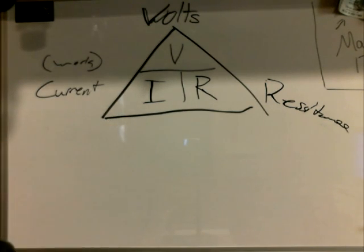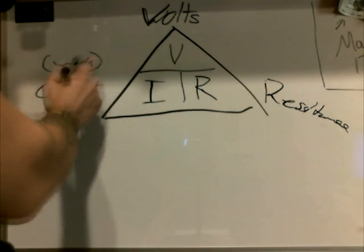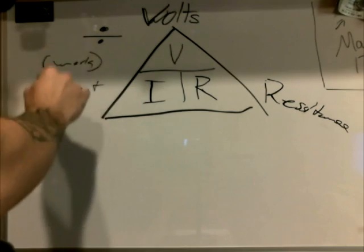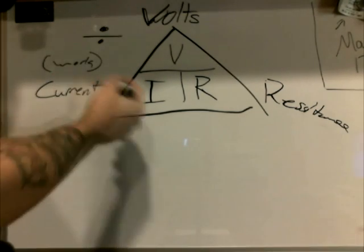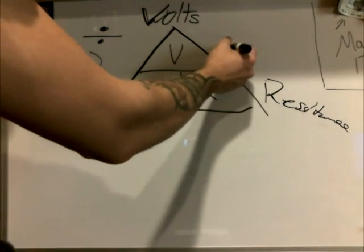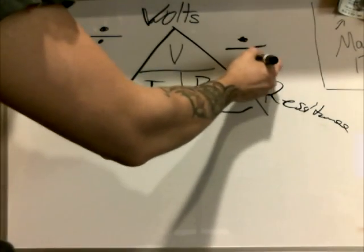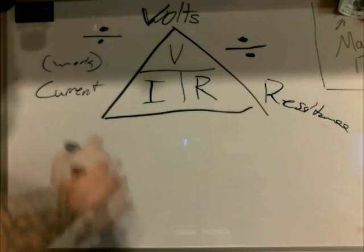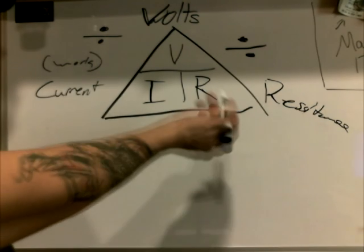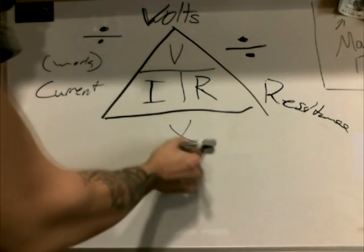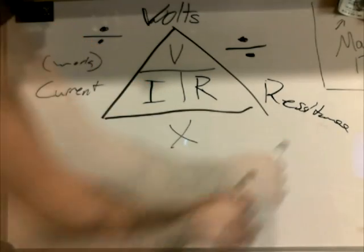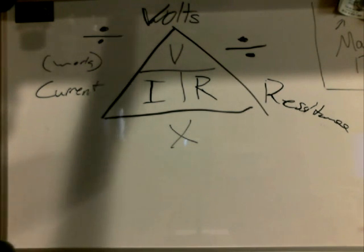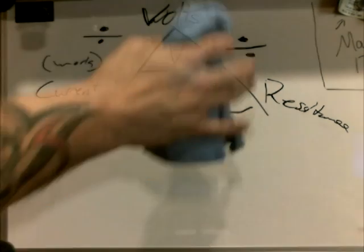From this triangle we can figure out Ohm's Law. Using this formula, you can divide the Volts by the Current to get Resistance, or divide the Volts by the Resistance — which is our primary equation — to get the Current or work being done. If you know the Current, you simply multiply Current times Resistance to get your Voltage. This is the basis for everything you're about to see.